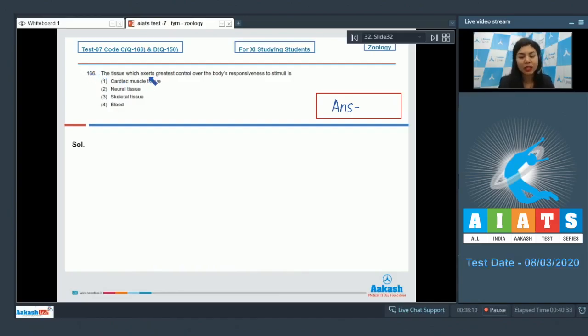Question 166: The tissue which exerts greatest control over the body's responsiveness to stimuli is cardiac muscle tissue, neural tissue, skeletal tissue, or blood.